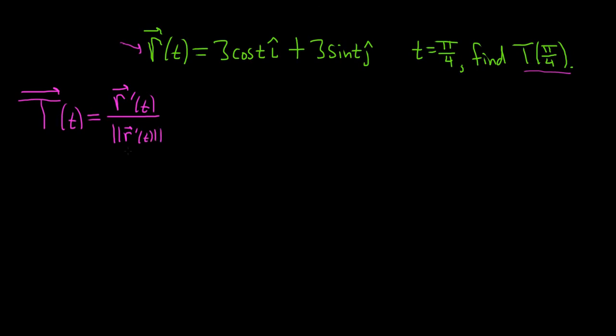From a physical perspective, if you think of r as your position function, then the derivative is the velocity. So we've taken the velocity vector, which is r prime of t, and we've divided by its magnitude. So what we've done is we've taken the velocity vector and turned it into a unit vector.